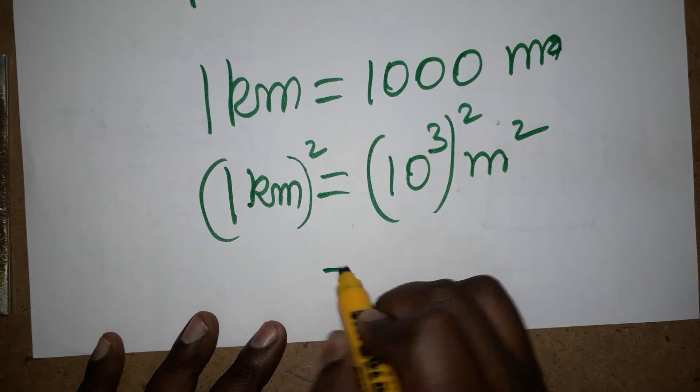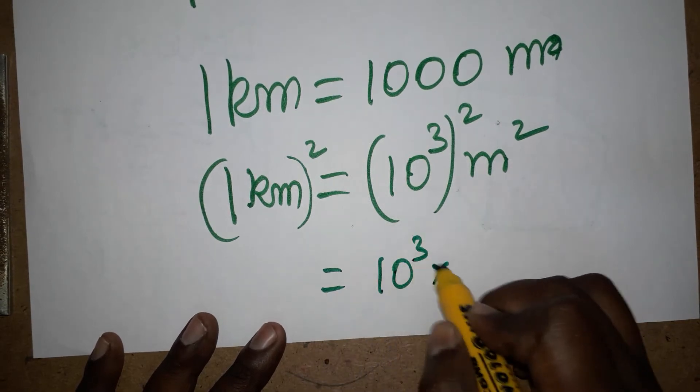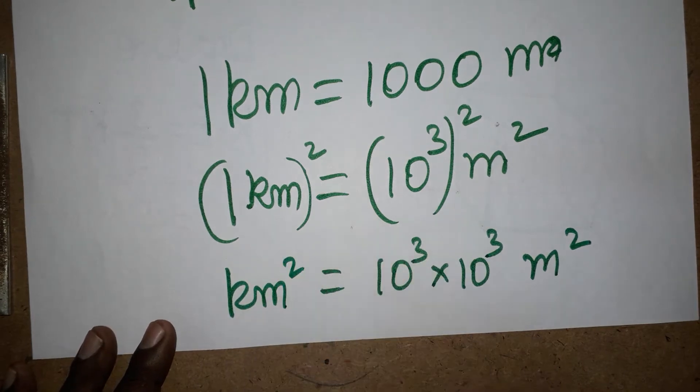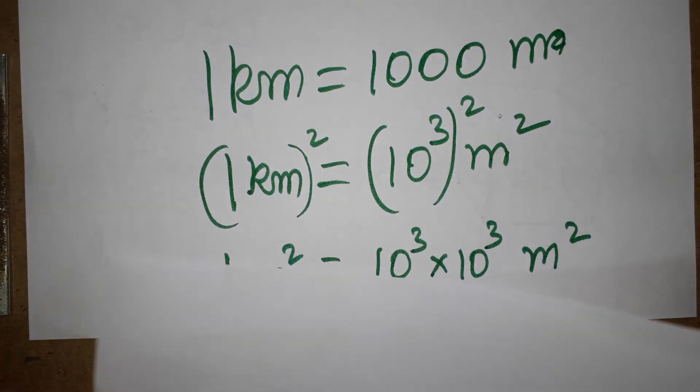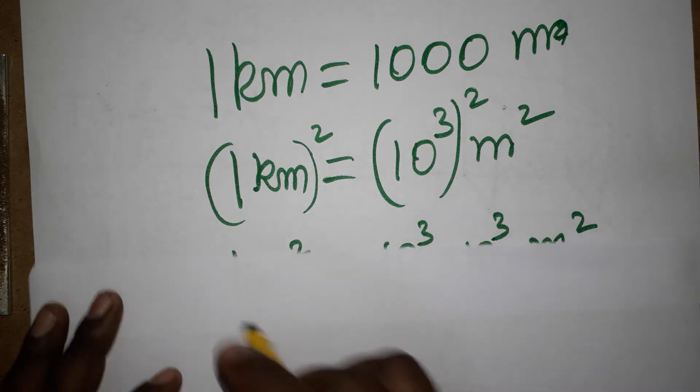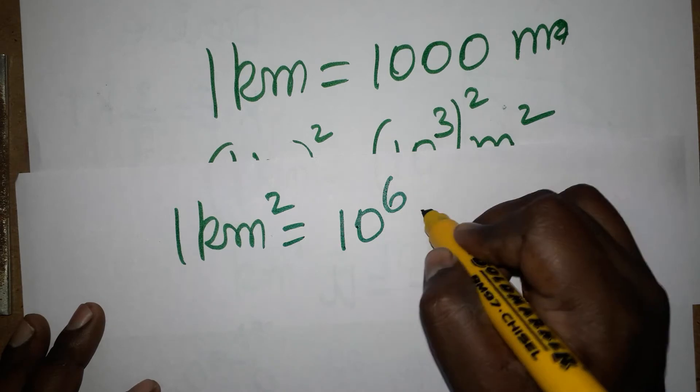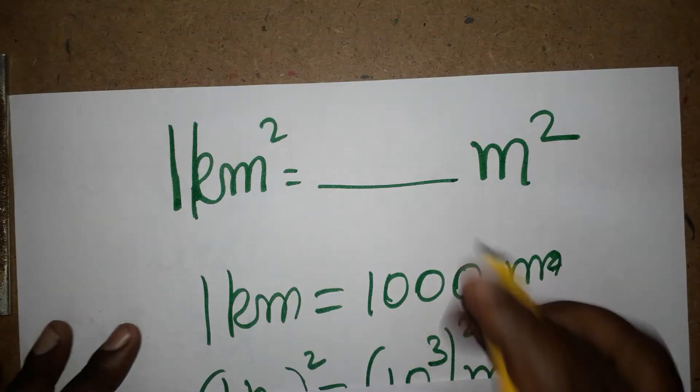you can write 10 power cube into 10 power cube meter square, kilometer square. The same base power you can add. So one kilometer square is equal to 10 power 6 meter square. So one kilometer square is 10 power 6 meter square.